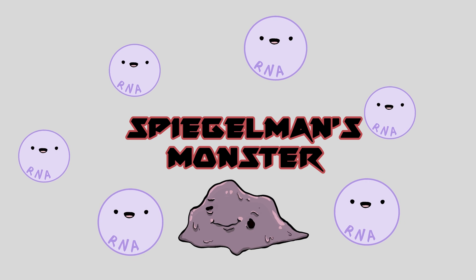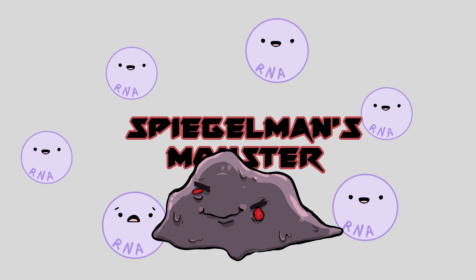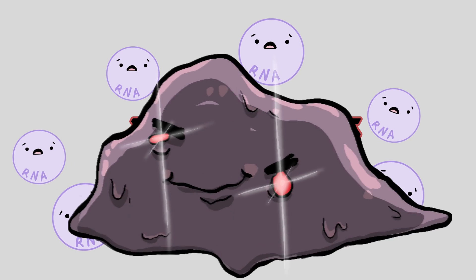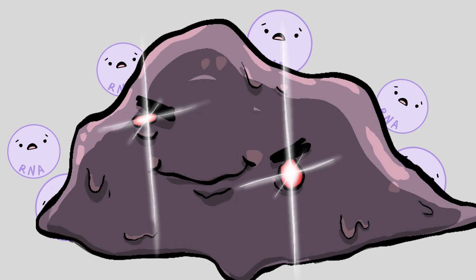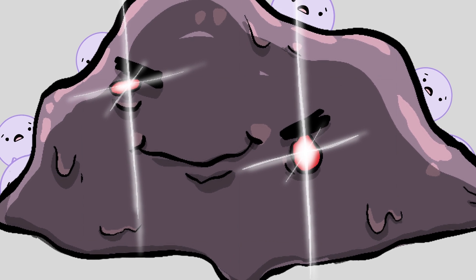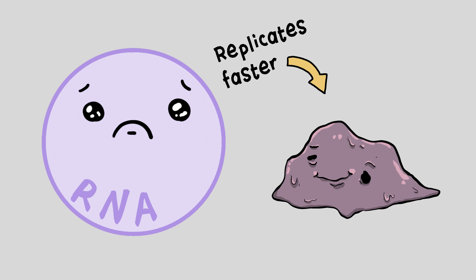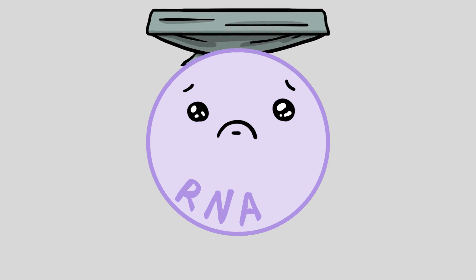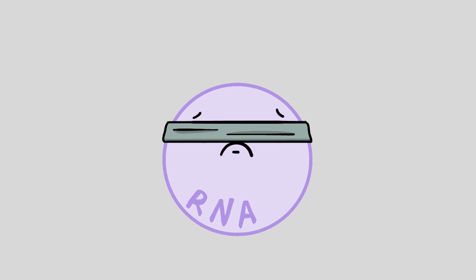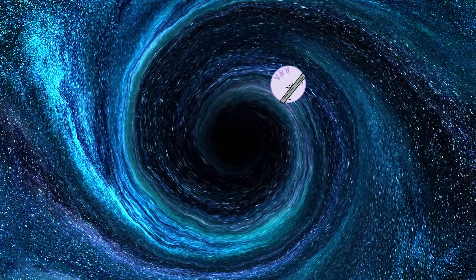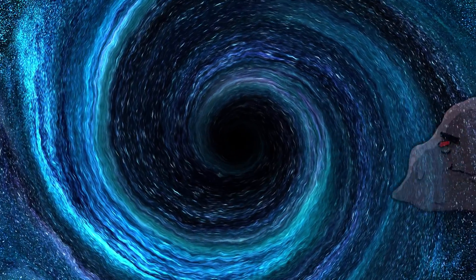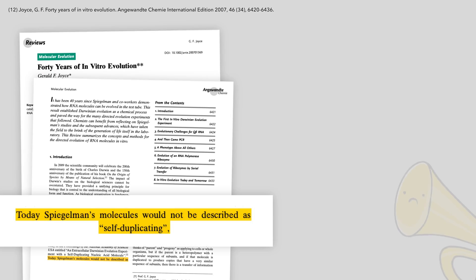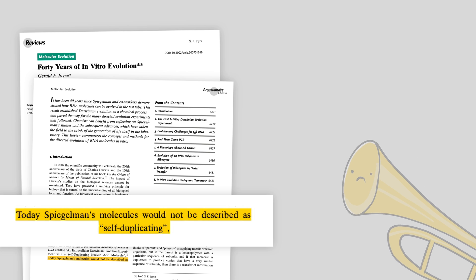The result was called Spiegelman's Monster. A cancerous, parasitic RNA that is replicated quickly, doesn't contribute anything useful, and uses up all the resources. This short, useless RNA will outcompete and dominate other useful RNAs, ones that can form useful catalysts or tools. Because shorter, simpler molecules will be replicated much faster. Stripped to the hype, all they proved was that a useful strand of RNA, when replicated blindly, favors getting shorter and shorter, spiraling toward uselessness and malignancy. Not the direction you want things to go if you're rooting for chemical evolution. A recent review of this work commented, Today, Spiegelman's molecules would not be described as self-duplicating.